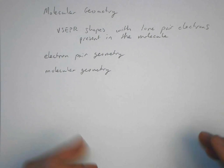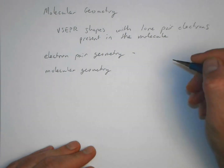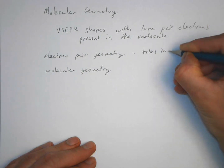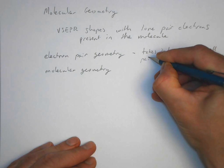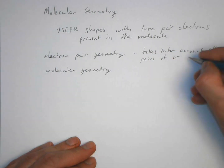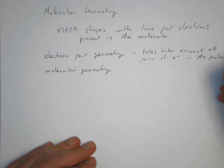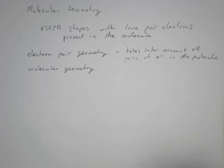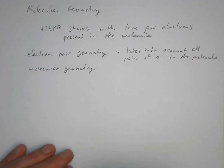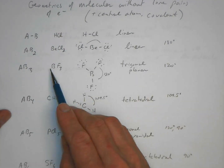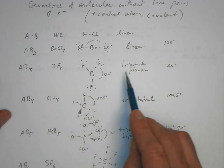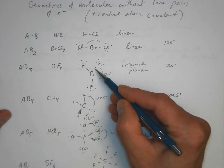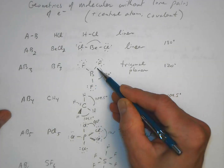The electron pair geometry of a molecule takes into account all the pairs of electrons in the molecule. For example, going back to what we looked at last time — with BF3, we would have a trigonal planar geometry. The electron pair geometry, with three electron pairs around the central atom, would be trigonal planar.